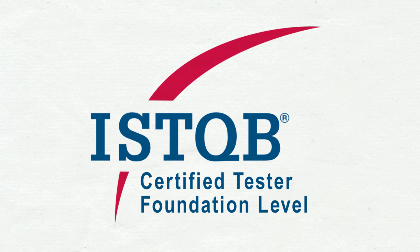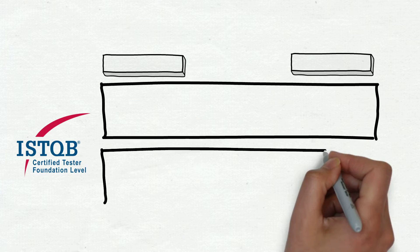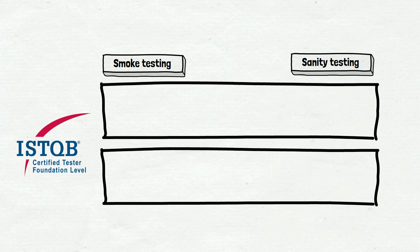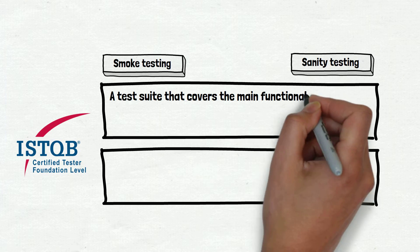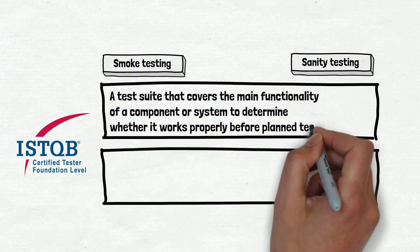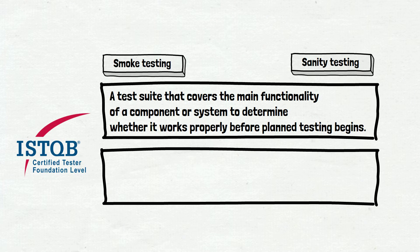As usual we used ISTQB as a formal reference. Currently ISTQB is the leading global certification scheme in the field of software testing, and when we talk formally we'll use the syllabus and the glossary as references. A link to the ISTQB website will be provided in the materials. We spent a lot of time investigating different levels and versions of ISTQB and found only one sentence in the ISTQB glossary related to smoke test, and it sounds like this: Smoke test — a test suite that covers the main functionality of a component or system to determine whether it works properly before planned testing begins.